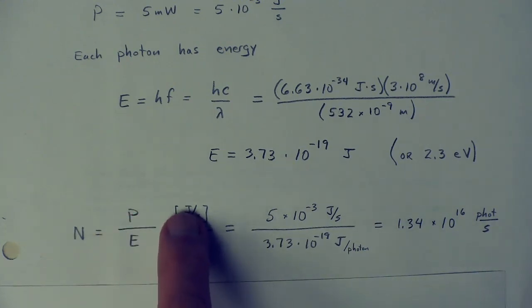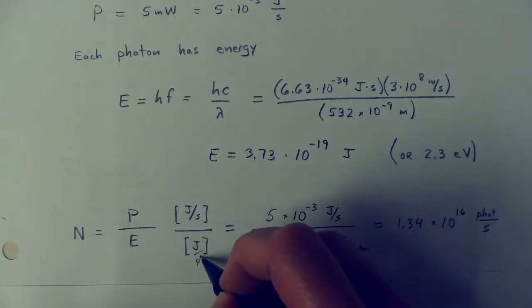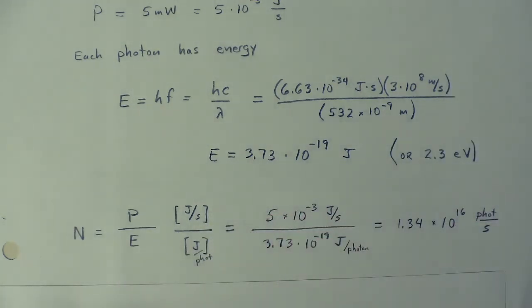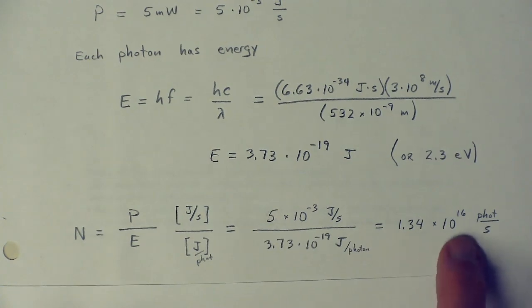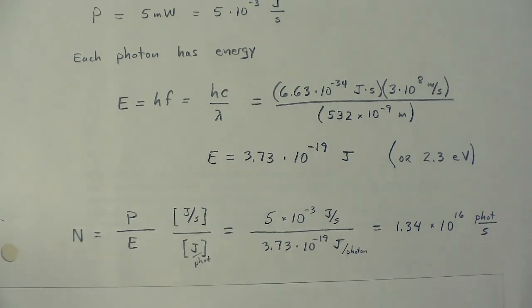Total power is joules per second. Energy of each photon is joules. Or if you like, you could call that joules per photon. And then you'd end up with photons per second. And we get a huge number. 1.34 × 10¹⁶ photons per second. So these photons are very, very fine. Very, very tiny. That's why we don't normally observe them individually.